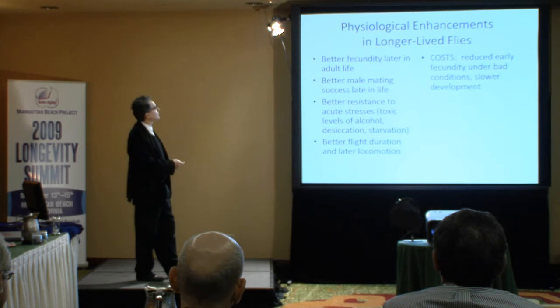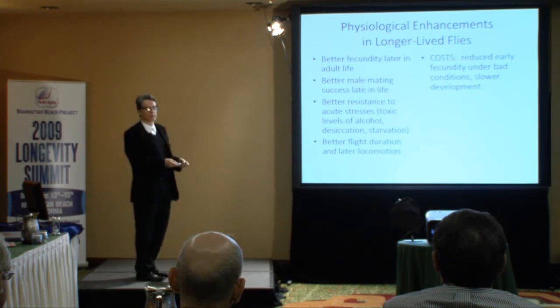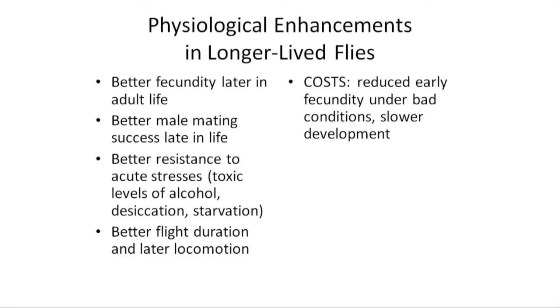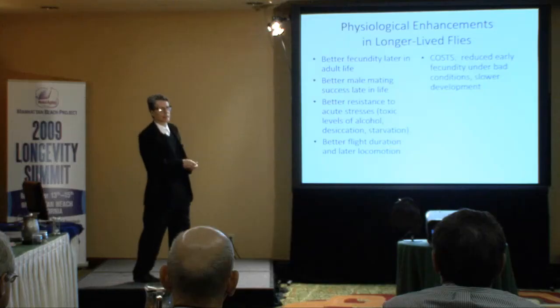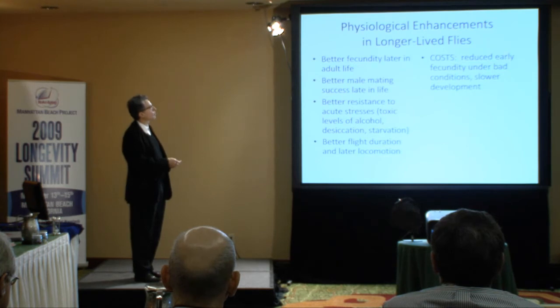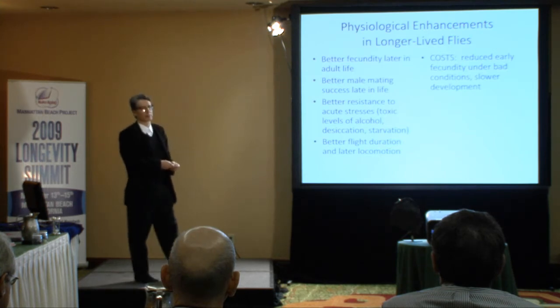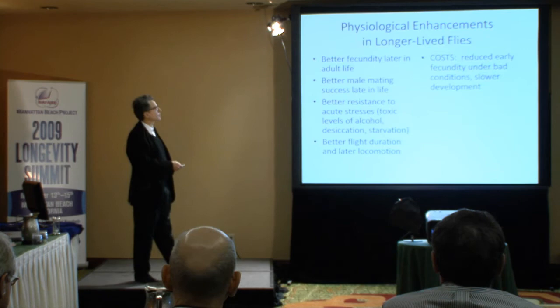Starting in the 80s and continuing through the 90s, we studied a lot of the organismal physiology of how this was achieved. One dramatic finding is that the total amount of reproduction over the course of these much longer-lived lives is much greater. There is dramatically better male mating success later in life. Better resistance to all kinds of acute stresses. Much greater athletic performance. Some reductions were noted: reduced early fecundity under bad conditions, not under good conditions, and slower rates of development by about a day to a day and a half, which is fairly significant for a fruit fly.